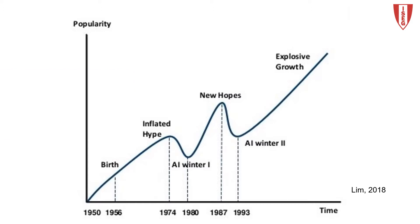The 1950s and 60s correspond to the first AI boom — it was the age of reasoning and heuristic search. Then there was a period called the first AI winter, when some expectations were not met.